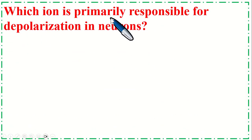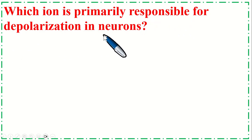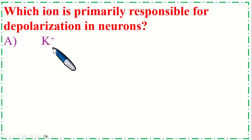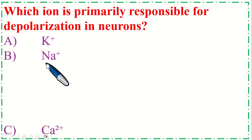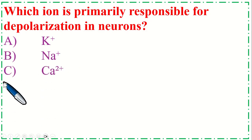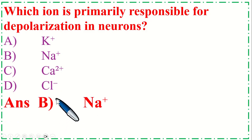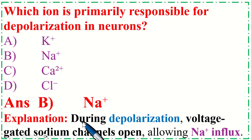Which ion is primarily responsible for depolarization in neurons? Option A: Potassium, B: Sodium, C: Calcium, and Option D: Chloride. The correct option is B, Sodium. During depolarization, voltage-gated sodium channels open, allowing sodium influx.